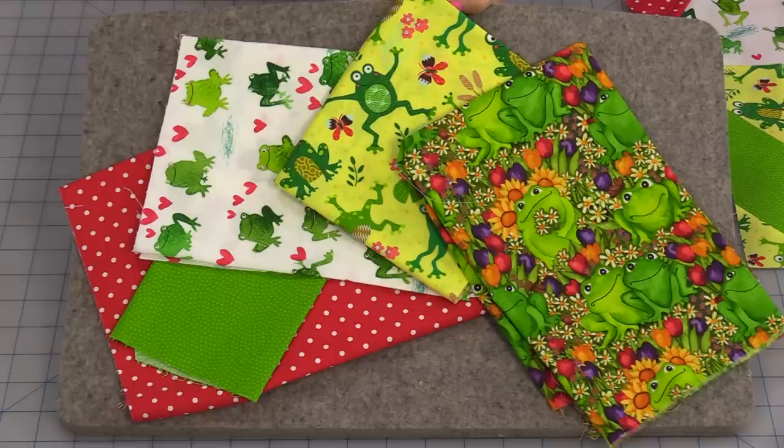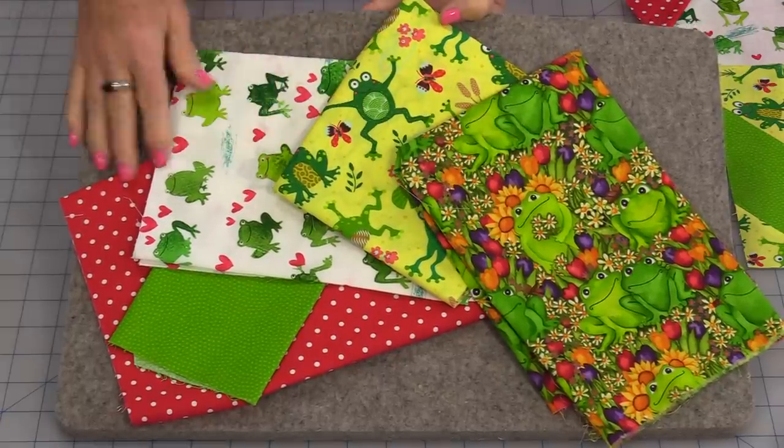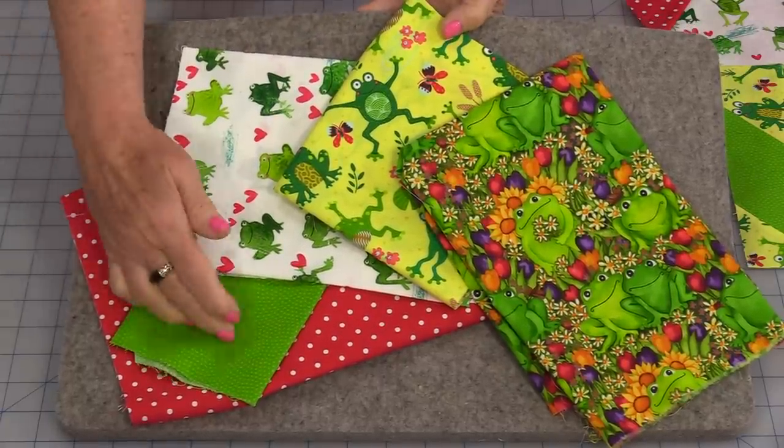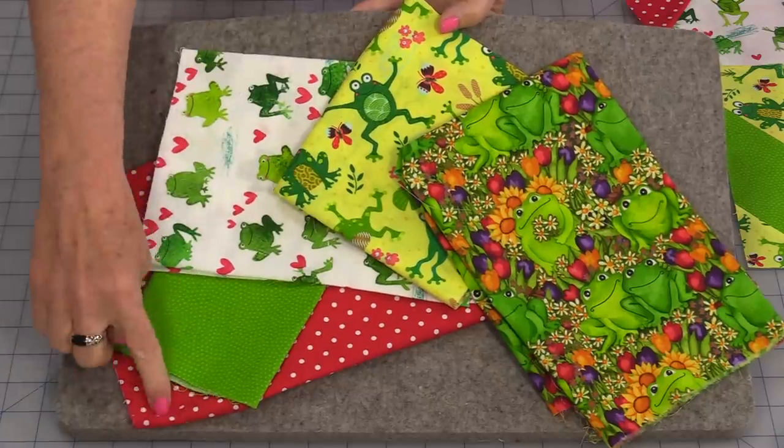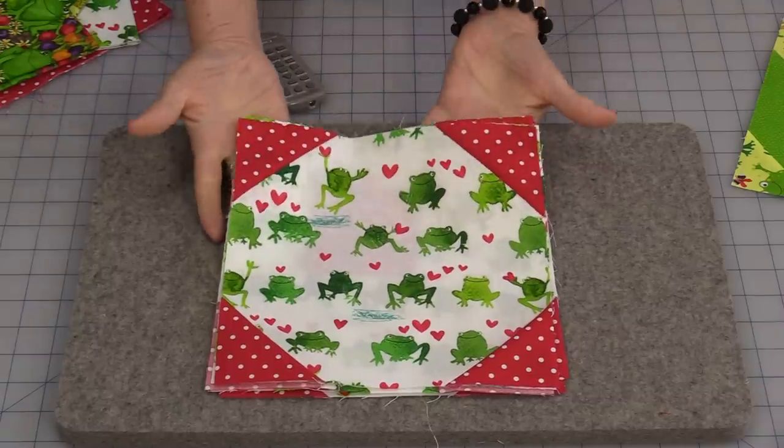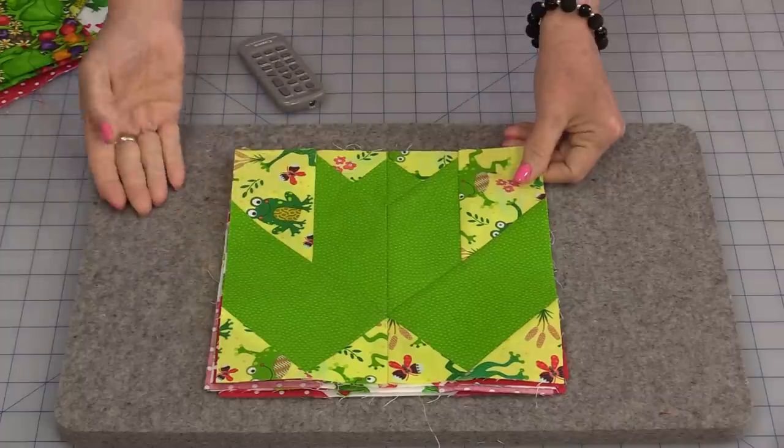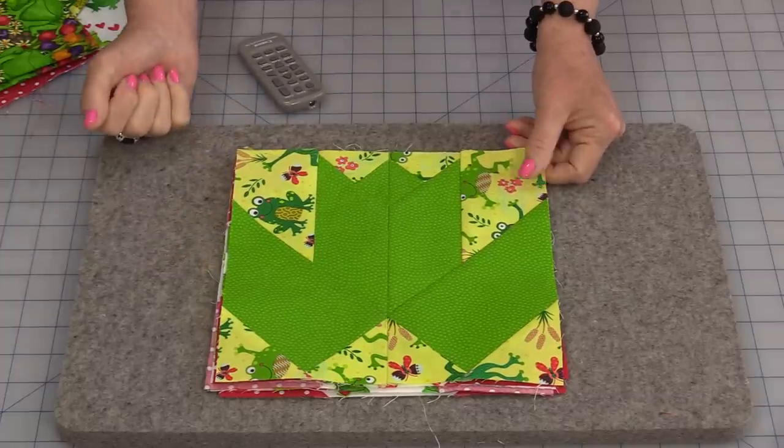Welcome to SewVeryEasy, my name is Laura. What do you do when you find really cute frog fabric? Well, you make a frog quilt. The fabric is from Timeless Treasures and it has these very fun frogs. I've pulled in a green to go with it and some red polka dots. We need to make six snowball blocks. These will become the lily pads and six frogs to sit on the lily pads.